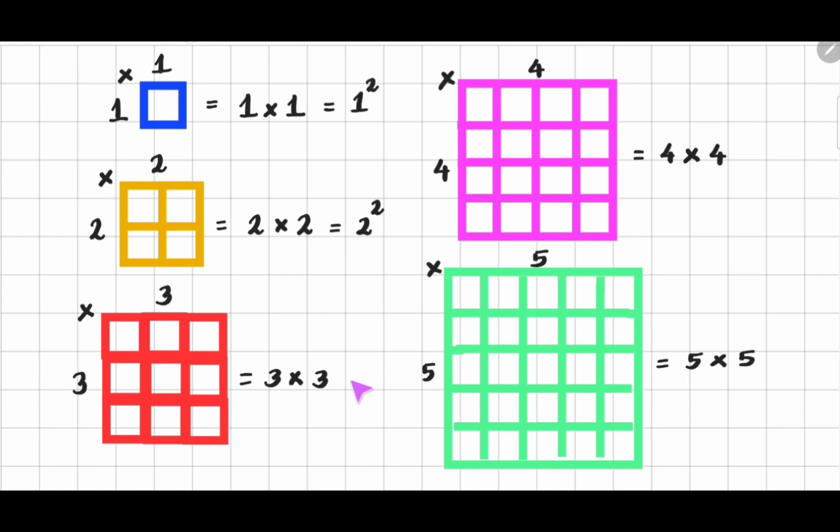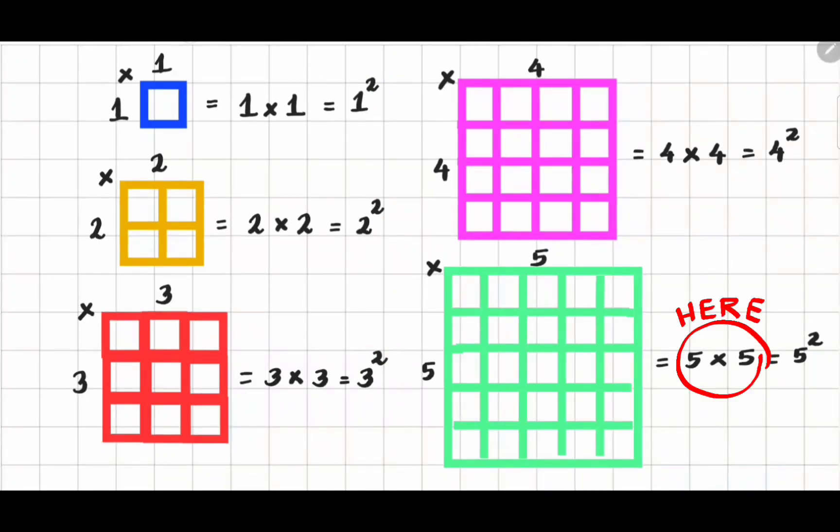We can represent the process of squaring a number by using the power of 2. When you see a power of 2, it can be read as squared. For example, 5 times 5 can be read as 5 squared.